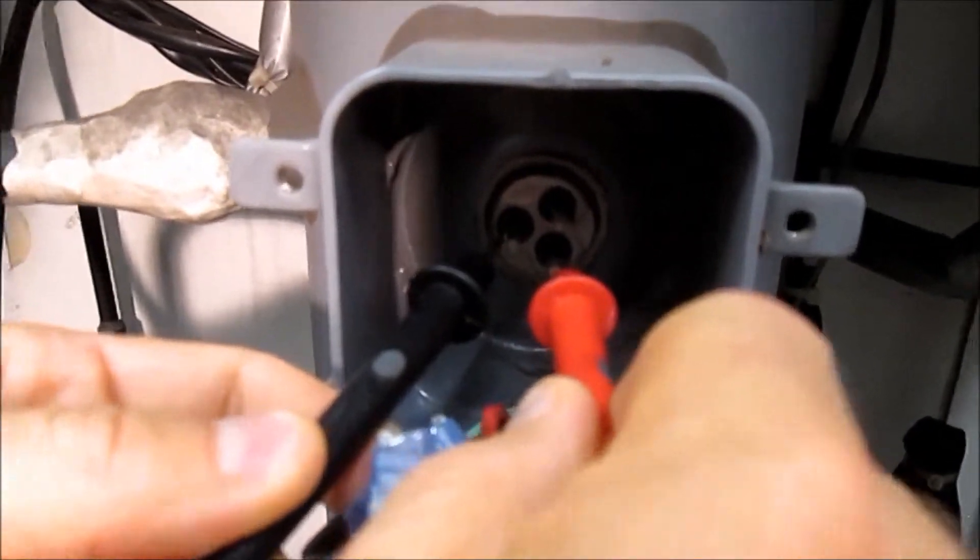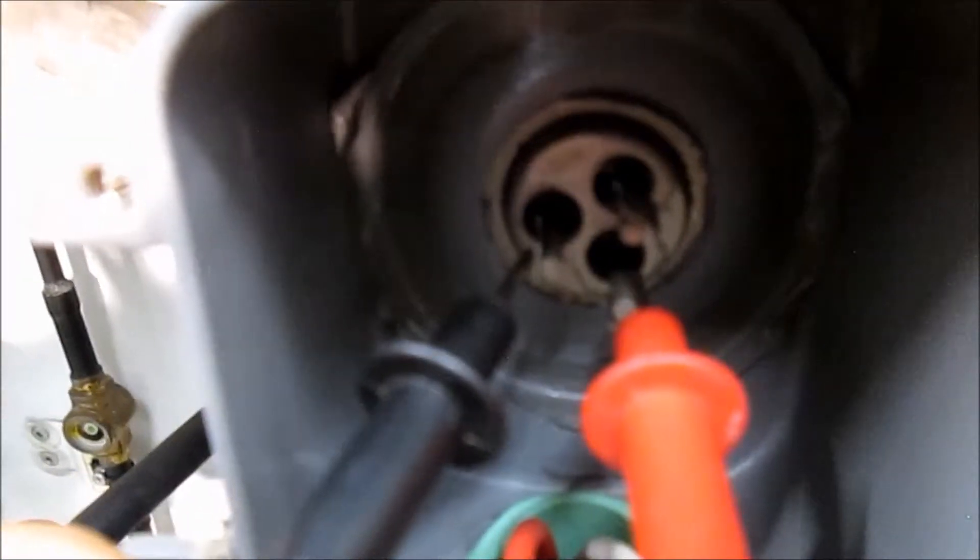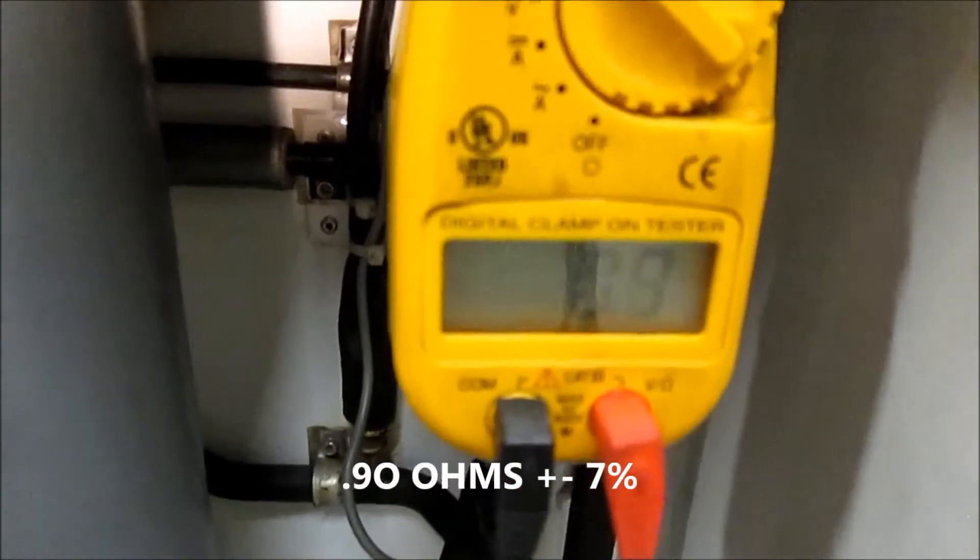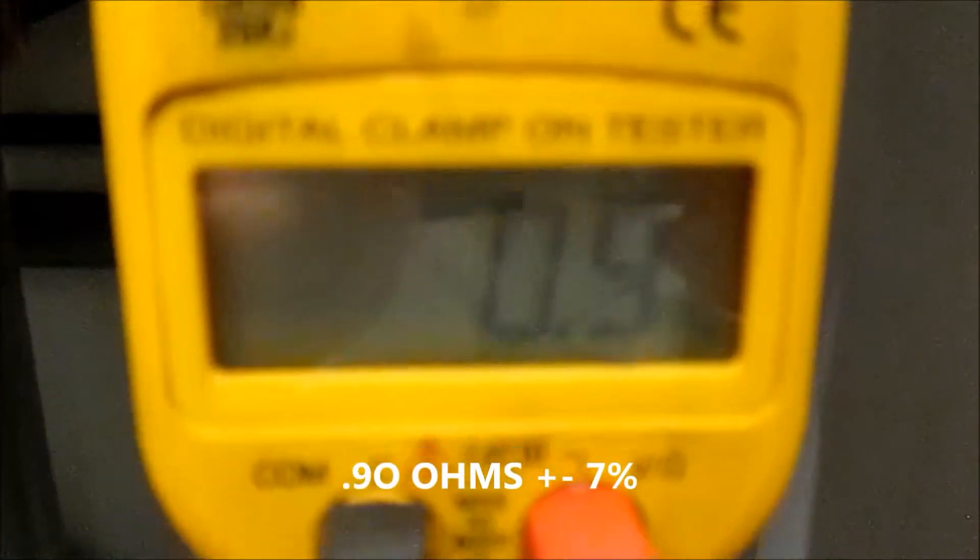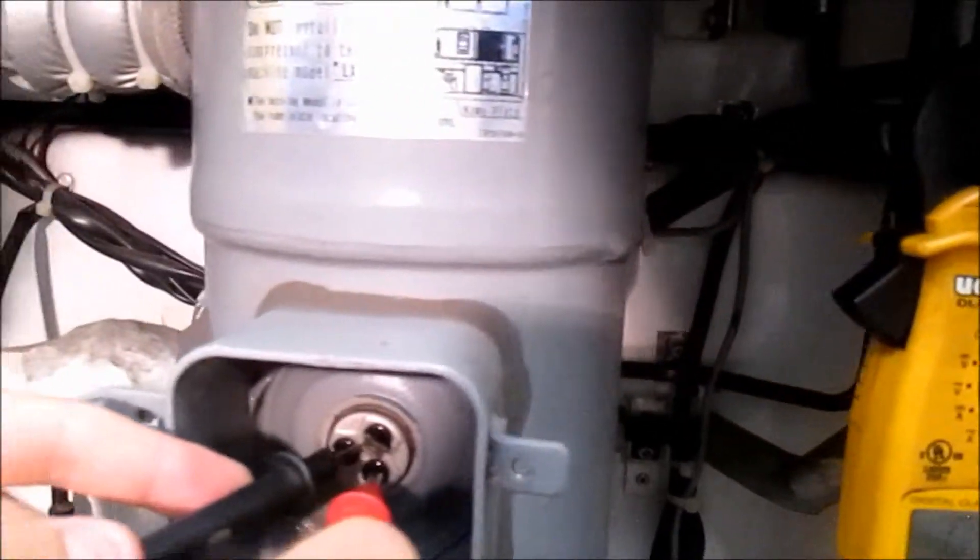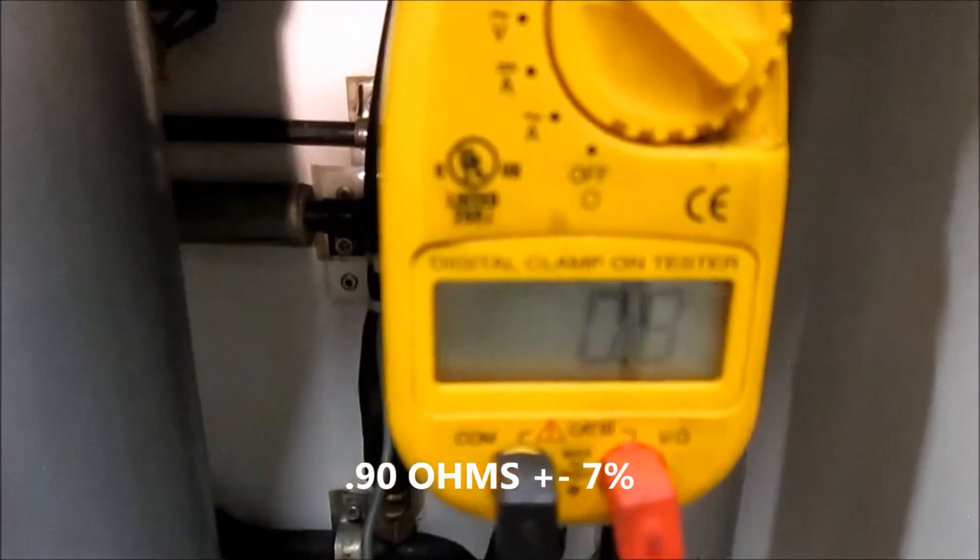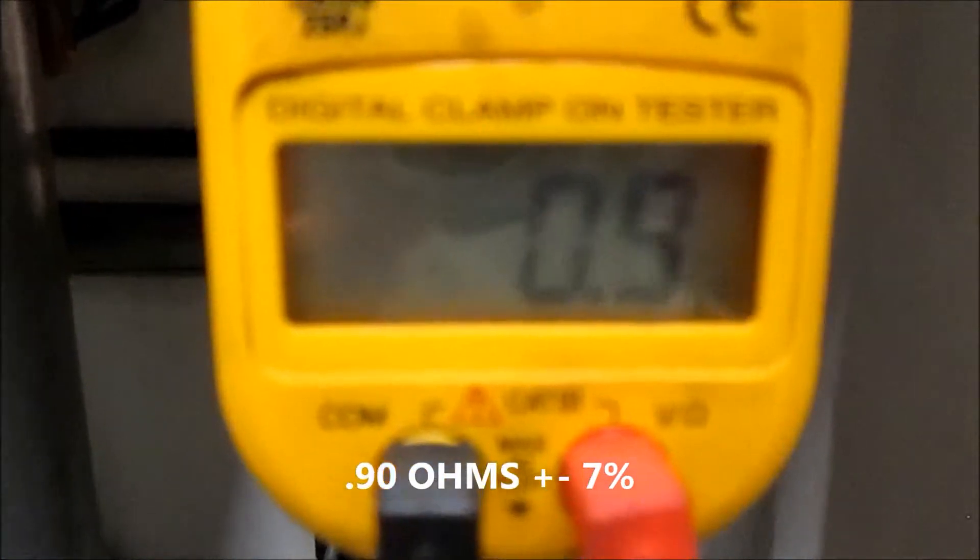These two should also be 0.9 to 1 on the meter. After it stabilizes, and the next one. This one should also be 0.9 plus or minus 7 percent.